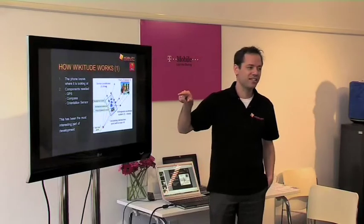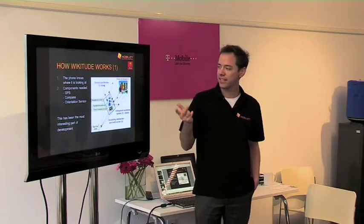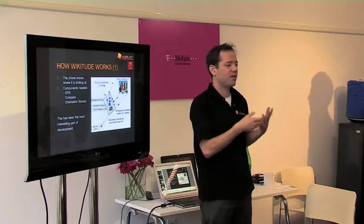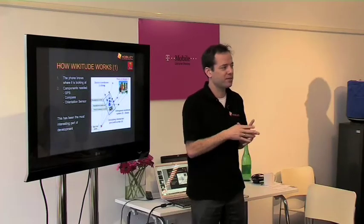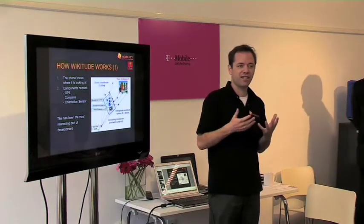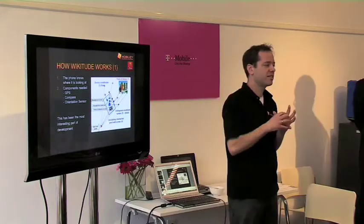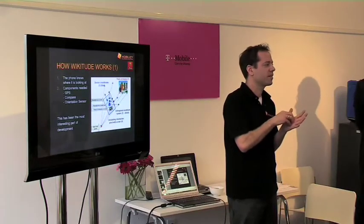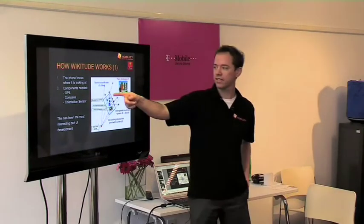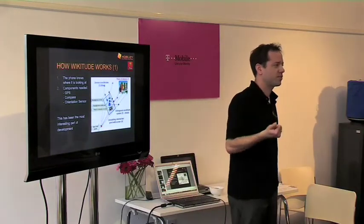So this is how the augmented reality part works. I need GPS, I need a compass, and I need an orientation sensor — which tells me exactly how I'm holding the phone. These are the three components, and the Android device was actually the first device to have all of them. The G1 was the first device where all these components came together and worked together. The iPhone, for example, does not have the compass, so this kind of application is currently not possible on the iPhone.